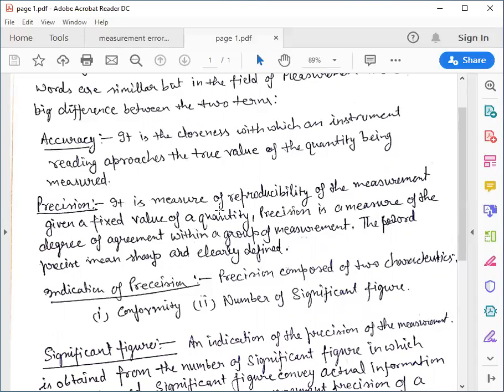Precision is due to reproducibility of the measurement. To understand precision, we take an example of a scale. In scale we have ten divisions. In one centimeter we have ten divisions.